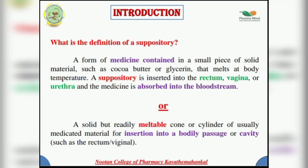The definition of suppositories: a medicament contained in a small piece of solid material such as cocoa butter or glycerin that melts at body temperature. Suppositories are inserted into the rectum, vagina, or urethra and medicines are absorbed into the bloodstream. They are also defined as solid, readily meltable cone or cylindrical medicated material for insertion into body passages or cavities such as the vagina and rectum.